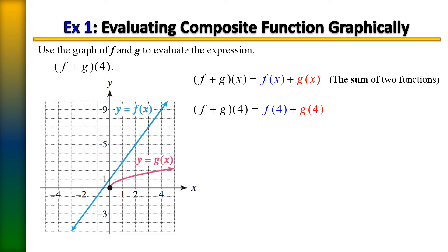Now let's find g of four. If we go over to where x equals four to find our y value, we're not on the graph. To get on the graph we would have to go up two — that's one, two. So therefore g of four equals two. We take those output values and simply add them together to give us eleven. So therefore f plus g of four equals eleven.